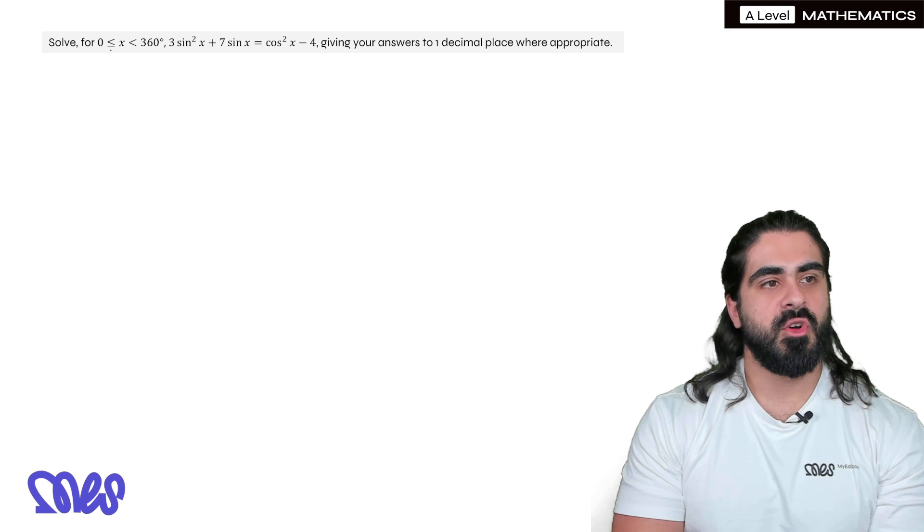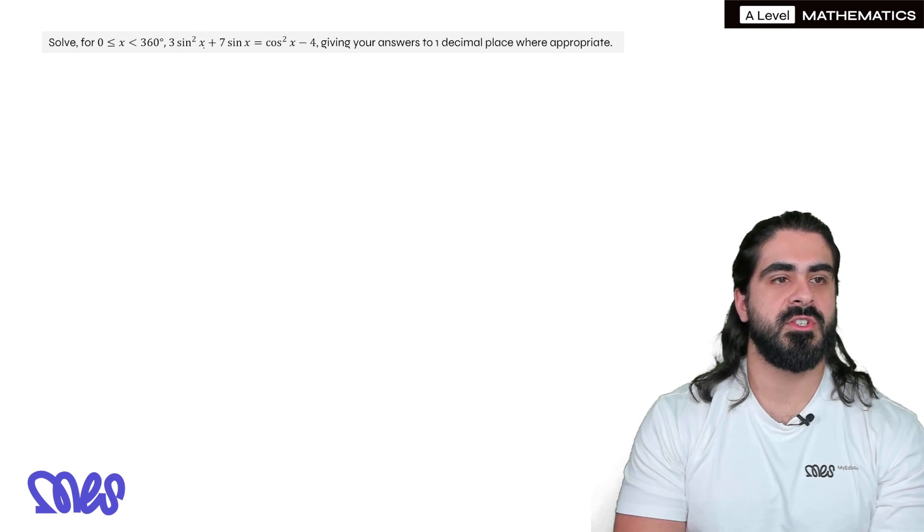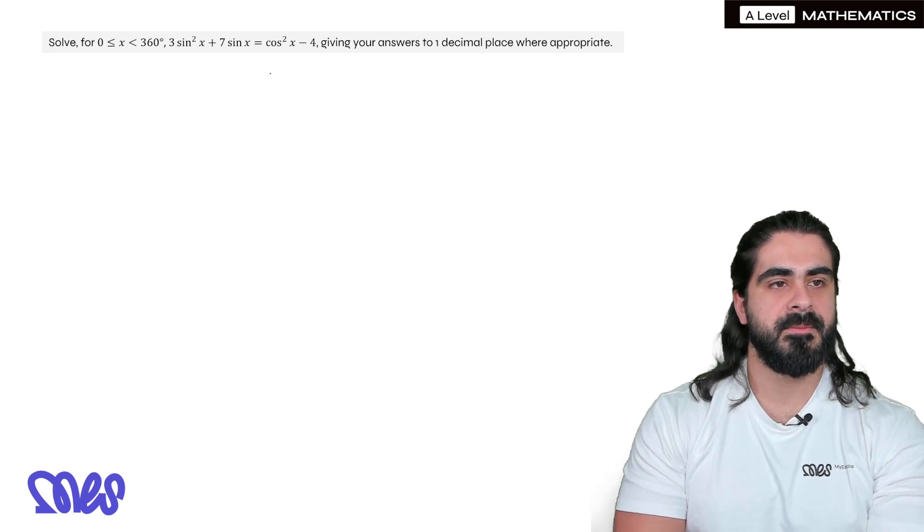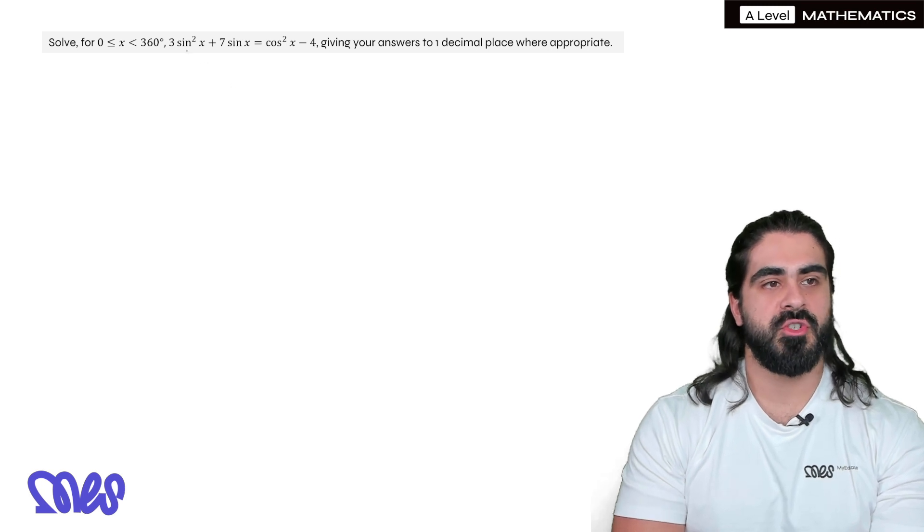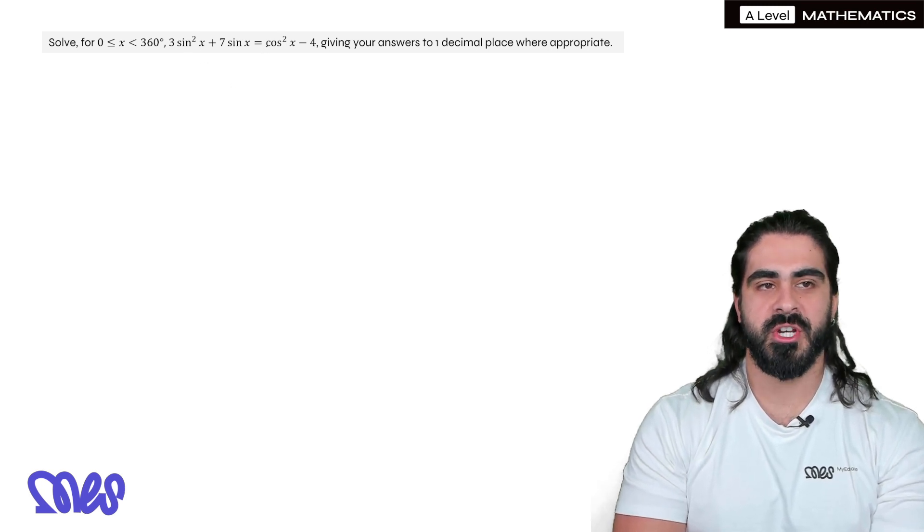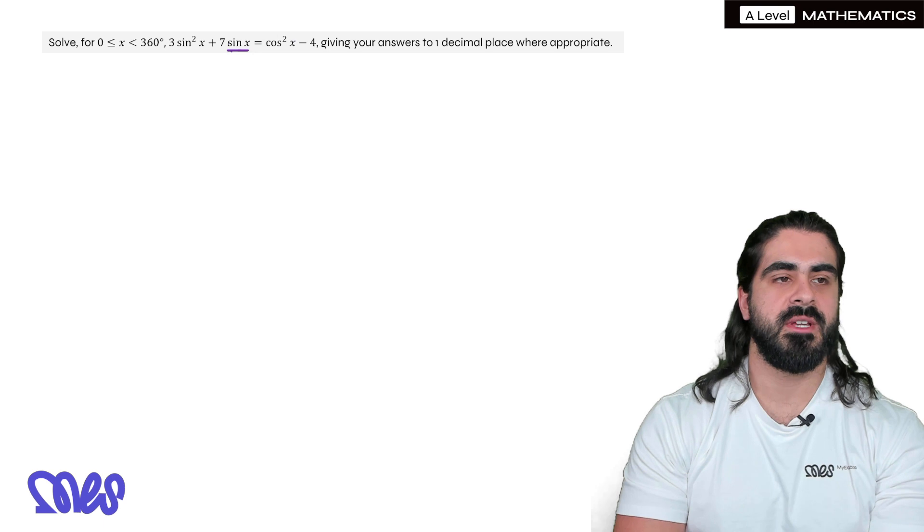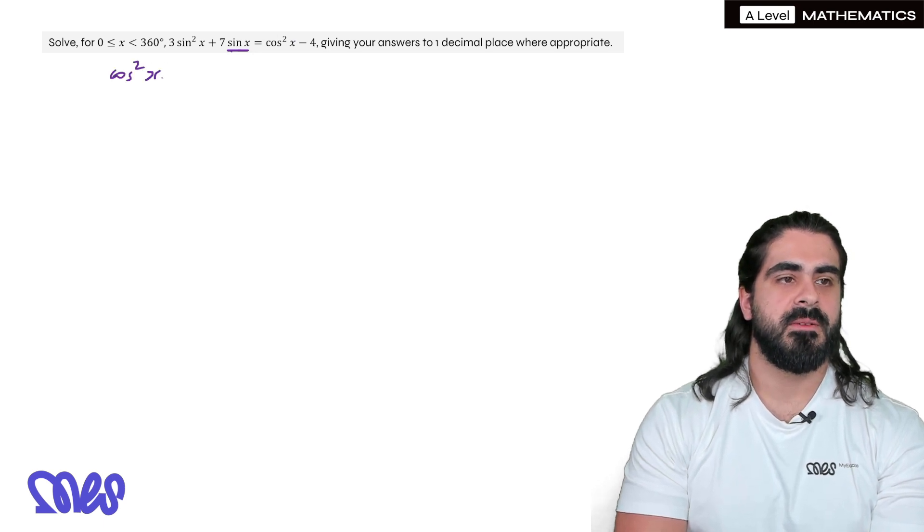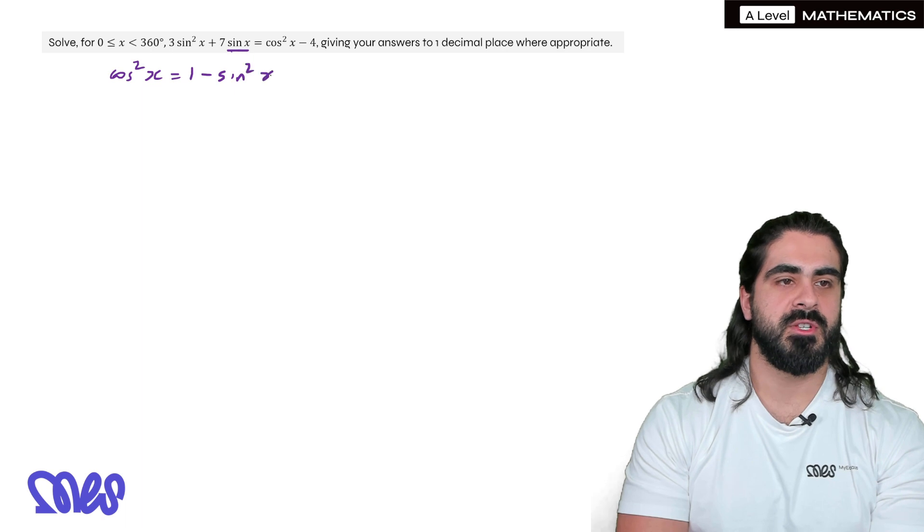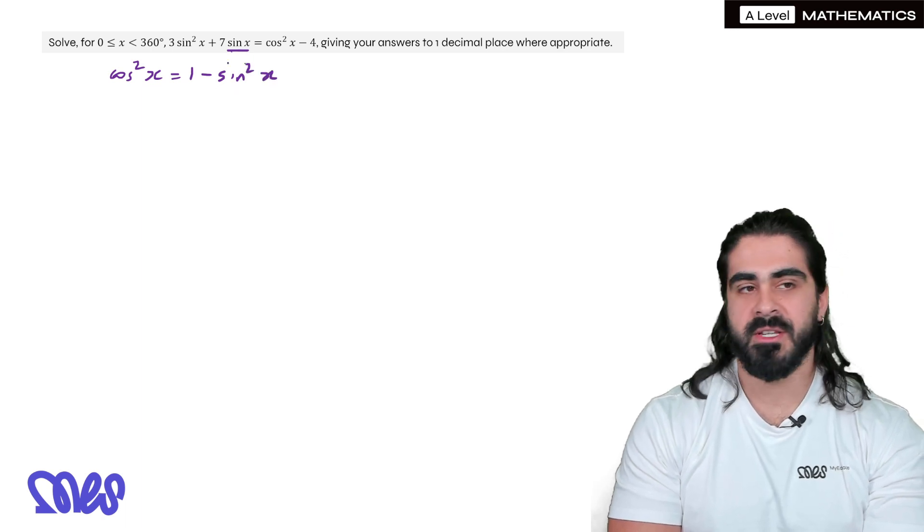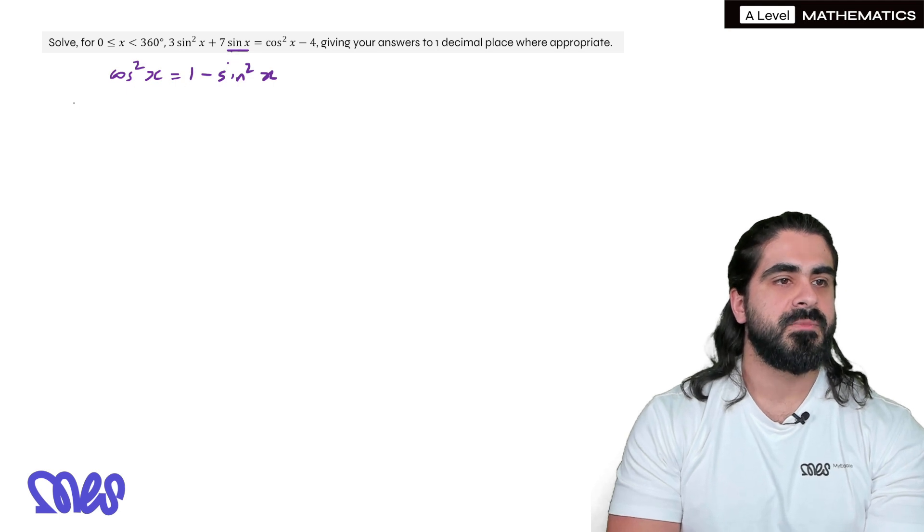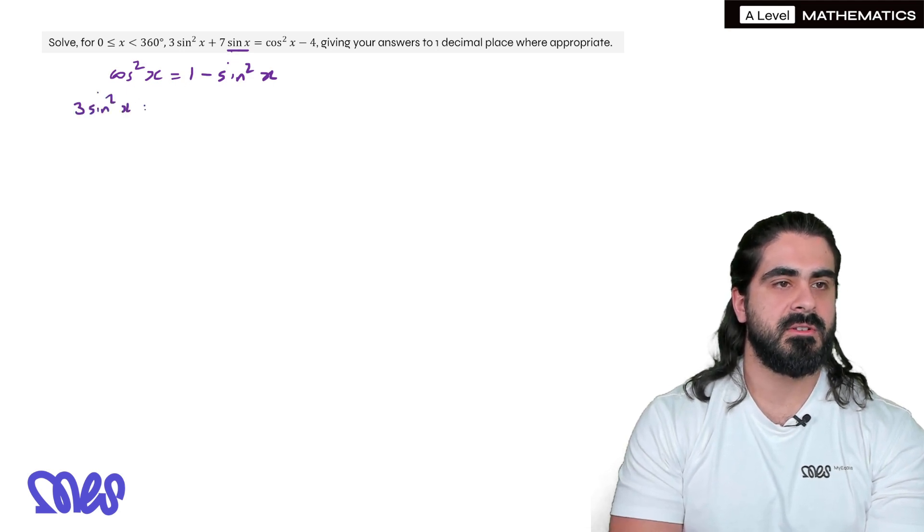Next question. Without much guidance, solve for x between 0 and 360: 3 sine squared plus 7 sine x equals cos squared minus 4. Give your answer to one decimal place where appropriate. Again, remember the trick. You have sine squared and cos squared, so which one do you change? You look at the term that is not squared. We're going to convert everything to that. So we need to change cos squared into sine squared. You should just know that cos squared is 1 minus sine squared. So we have 3 sine squared x plus 7 sine x equals cos squared, which is 1 minus sine squared minus 4.